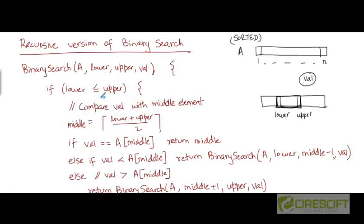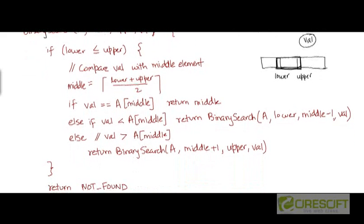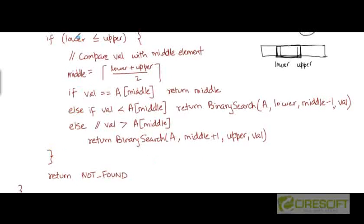Within this function, we will check whether lower is less than or equal to upper. This will be true as long as we haven't narrowed down our search and failed. The only condition under which lower will be greater than upper is if our search fails. If that condition is false — that is, if the lower index ends up being larger than the upper index — then we return that we did not find the value in the array.